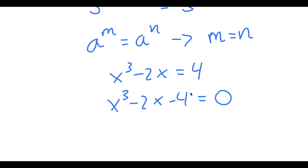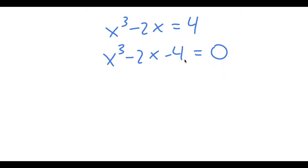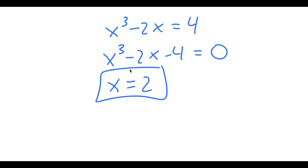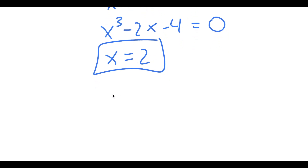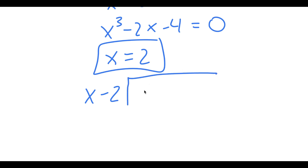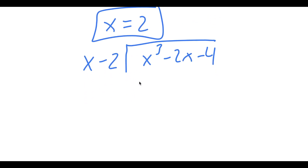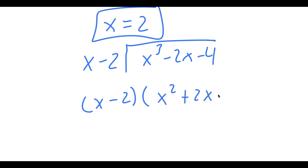To solve this, we have to find one solution of x first, so we can use that to find the other solutions. We keep plugging in numbers — if you plug in 2, the expression equals 0, so x equals 2 is one solution. Using this solution, we find the rest by doing long division: we divide x cubed minus 2x minus 4 by x minus 2, and end up getting x minus 2 times x squared plus 2x plus 2 is equal to 0.